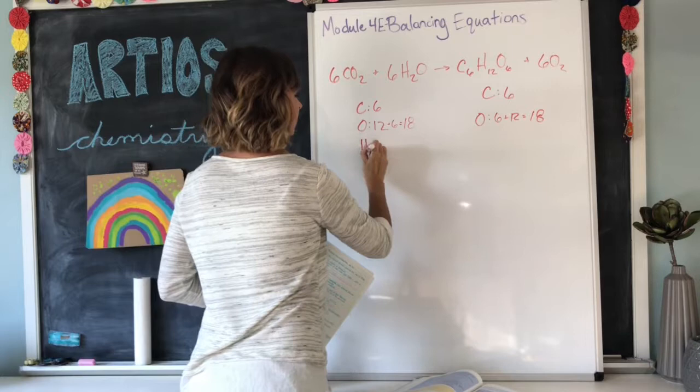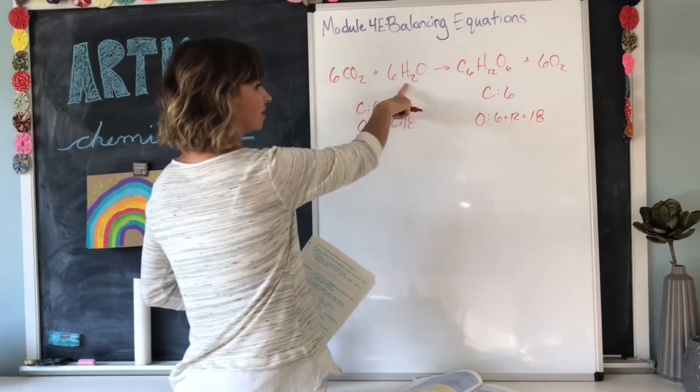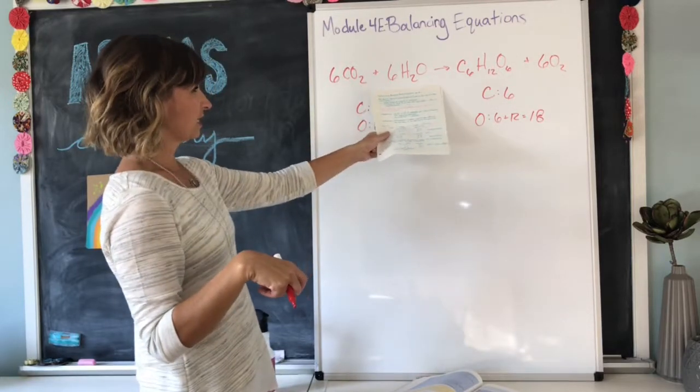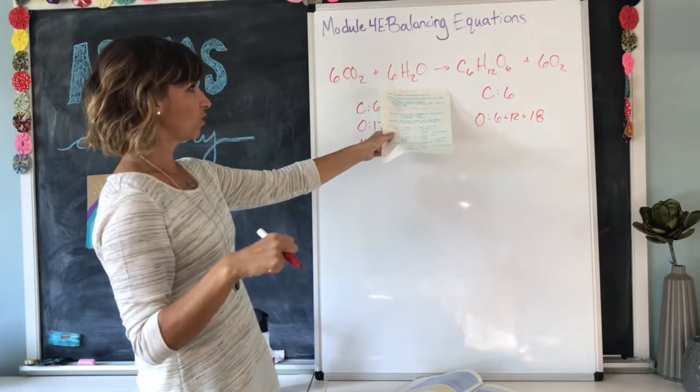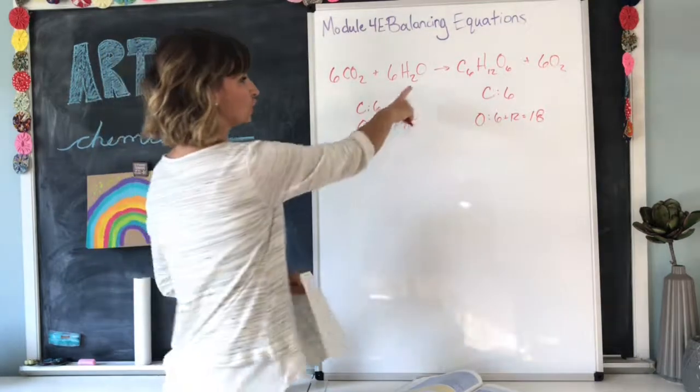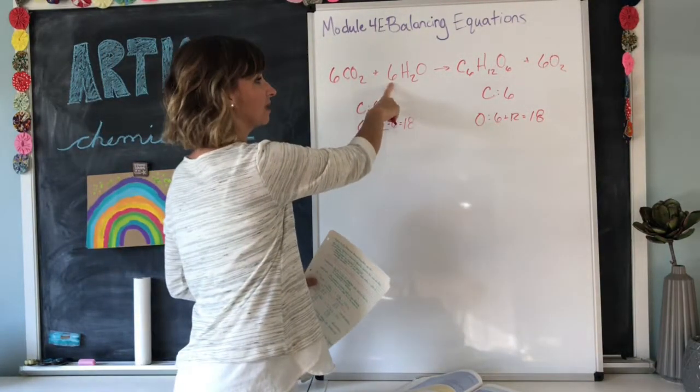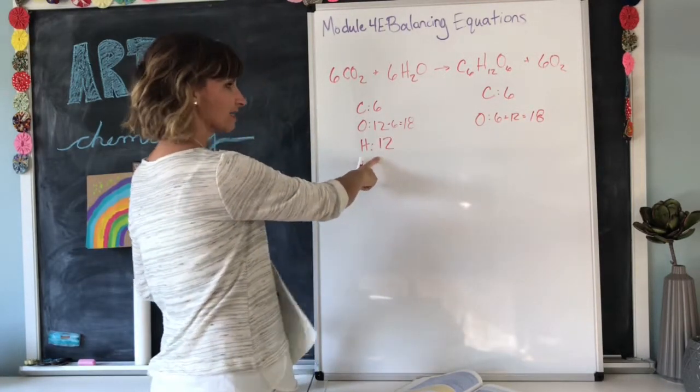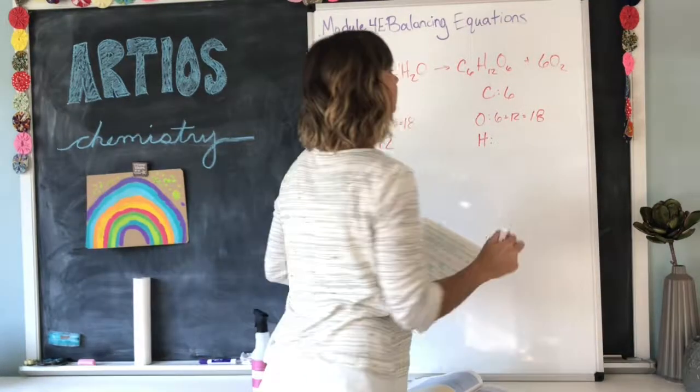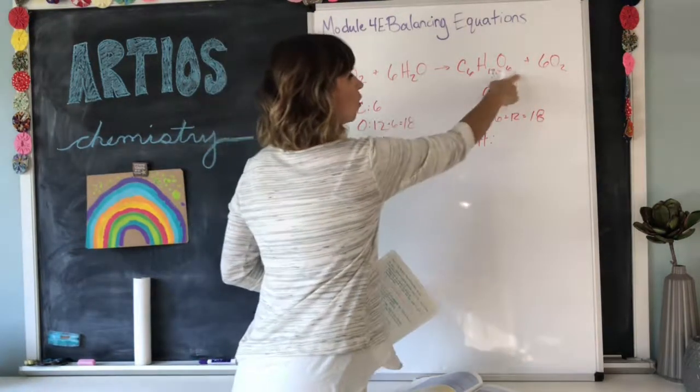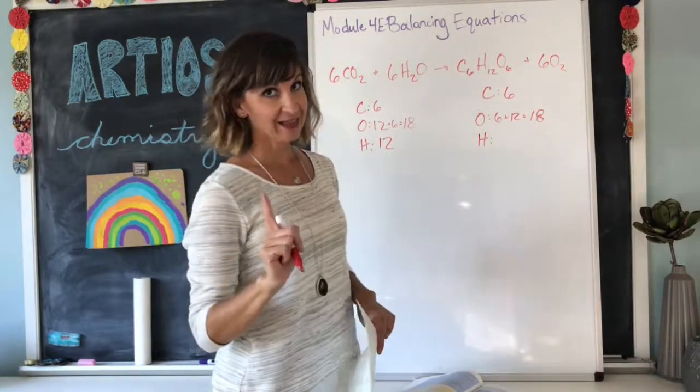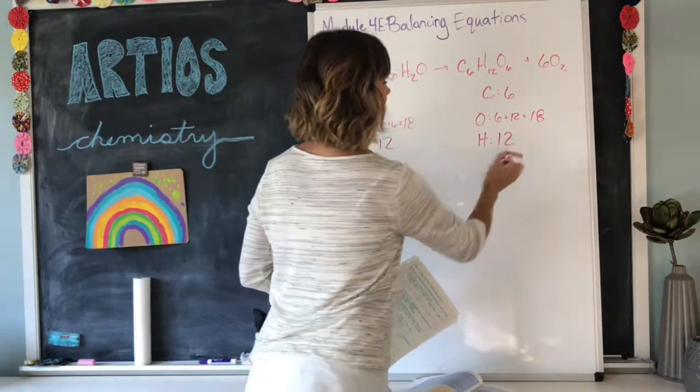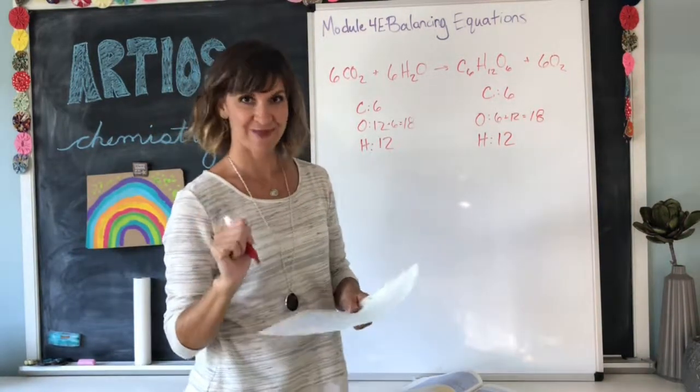Next, we have hydrogen, and this will be the last element that we have to do. That's all that's left is hydrogen. Hydrogen is present here in the water molecule. There are two hydrogens in each molecule, and there are six molecules. So, six times two is 12 hydrogens on the reactant side, and on the product side, there's only one of this large molecule, and in that large molecule, there are 12 hydrogen atoms. So, 12 over here, 12 and 12. The hydrogen is balanced.